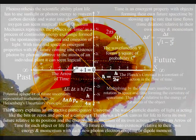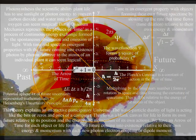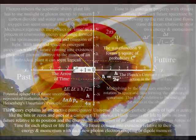Another example is photosynthesis, the scientific ability plant life has to use sunlight or photon energy to convert carbon dioxide and water into glucose and oxygen.